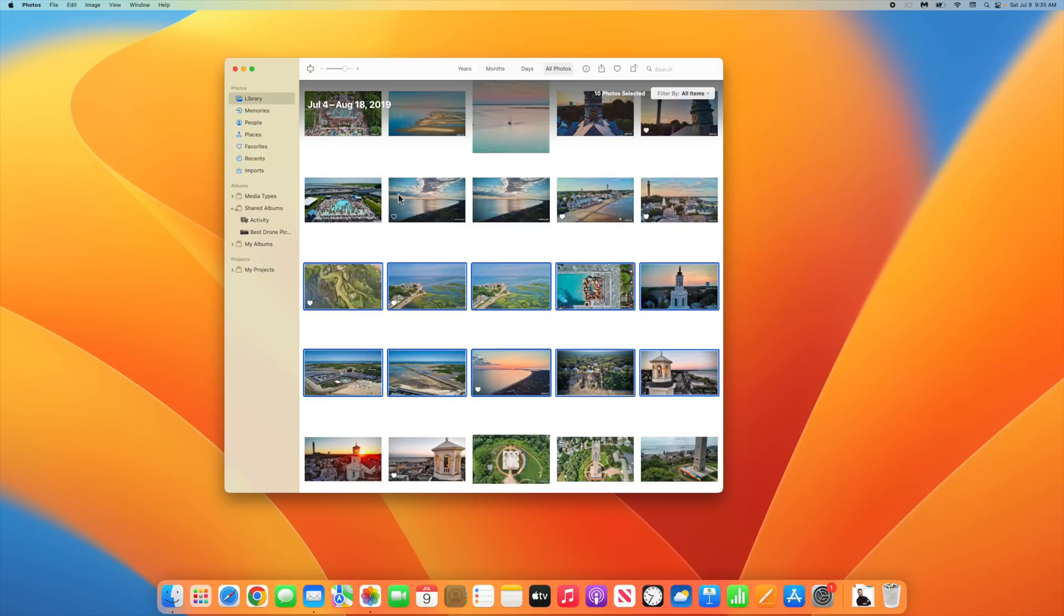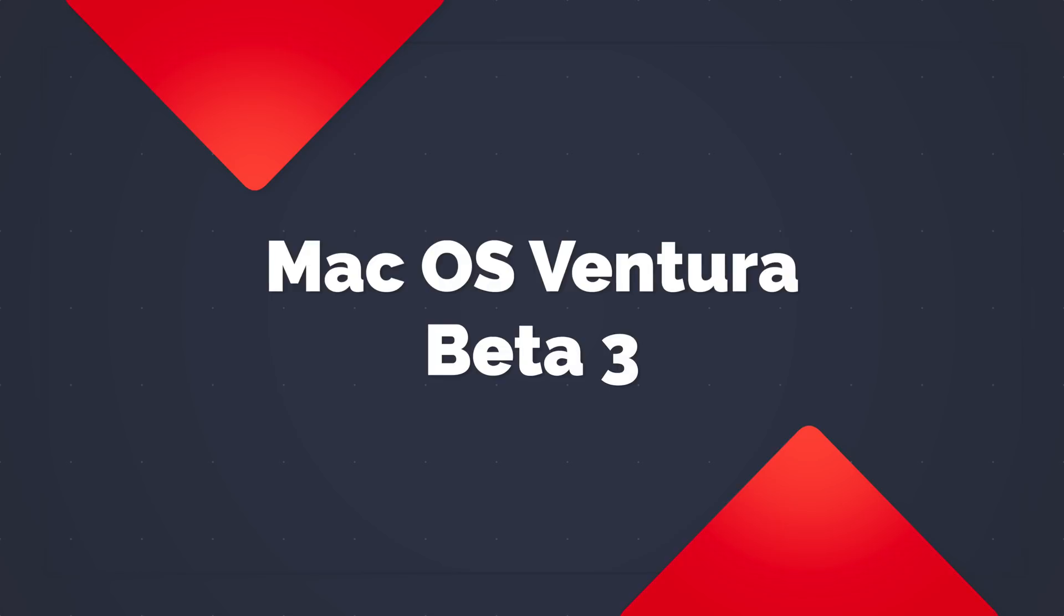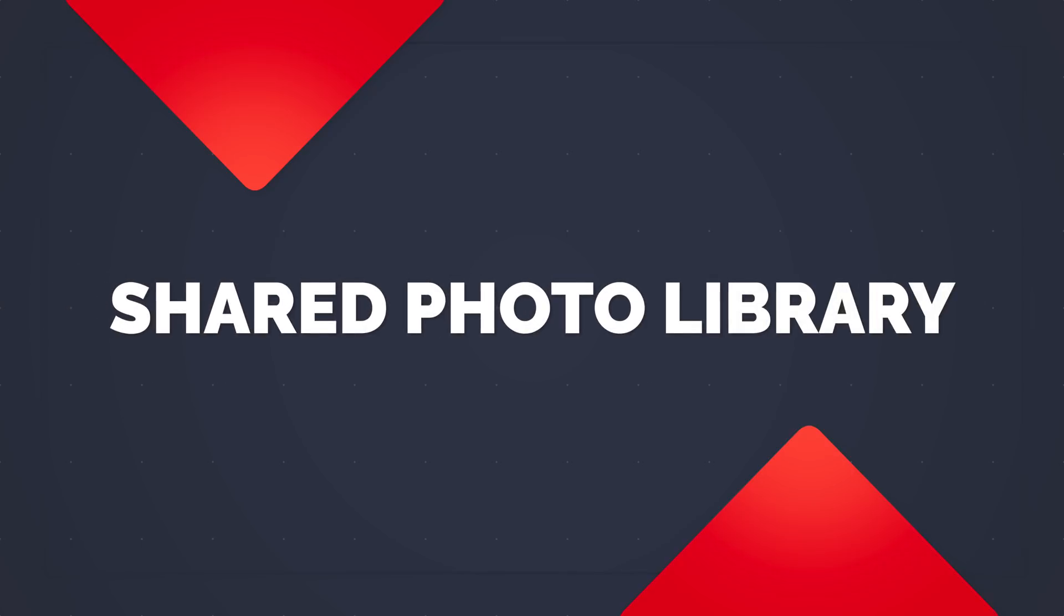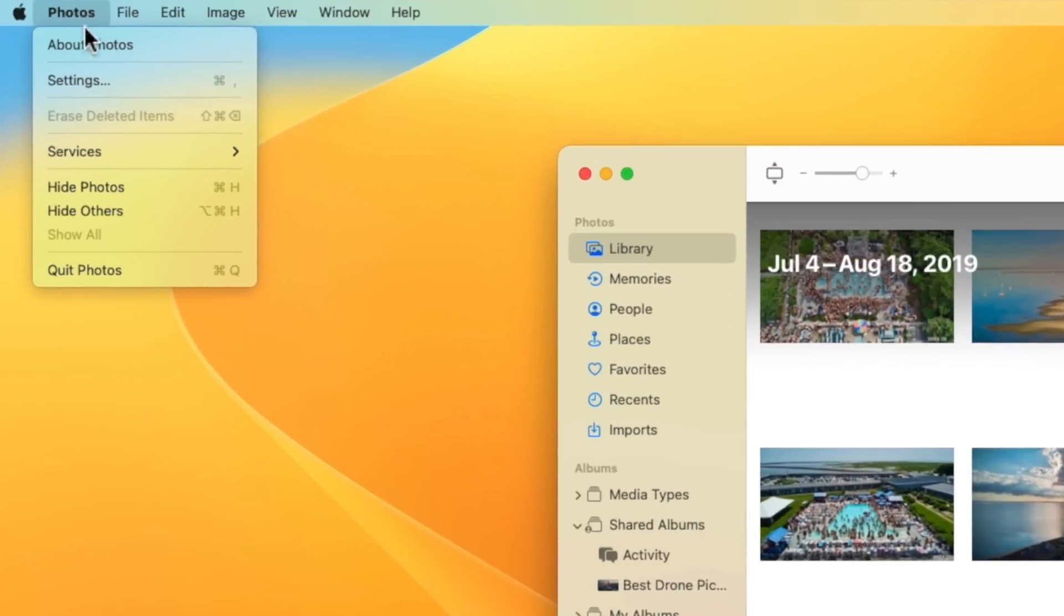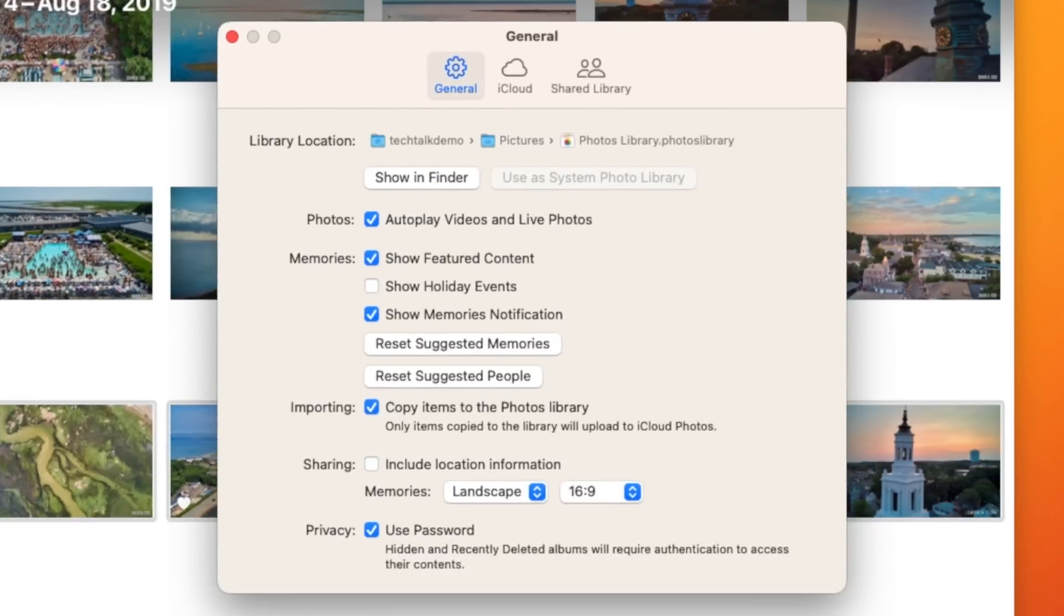This next segment was added at the last minute. Just as I was putting the finishing touches on this video, Apple released Beta 3 of macOS Ventura. And one of the features that was previously unavailable, I can now show you. That new feature is the ability to create a shared library. While Apple has had shared albums for years, there has never been a way to unify all of the photos that you want to share with the other people that make up your family. To set up this feature, go to Settings and click on the tab for Shared Library.